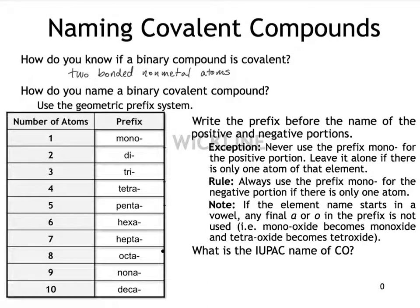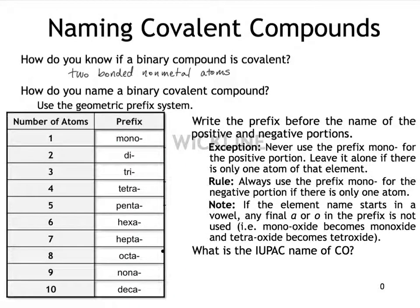There are a couple of exceptions and rules. Mono does mean 1, but we never use this prefix for the positive portion of the molecule. Since the positive portion is always written first, just know that the molecule's name is never going to start with mono — you just say the element name. However, if the negative portion of the molecule has only 1 atom, you are allowed to use mono for the second element, but not the first.